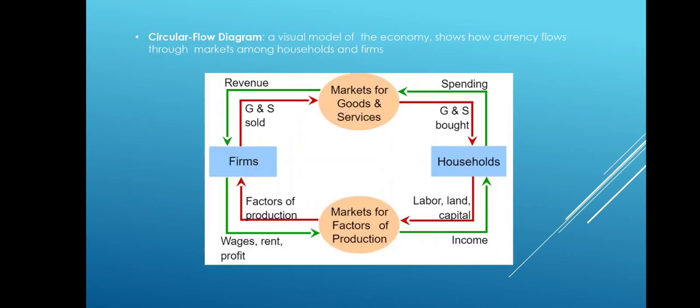Circular flow diagram — it's a visual model of the economy. It shows how currency flows through the market among households and firms. Households spend money and buy products from markets of goods and services. The revenue for markets for goods and services is obtained from firms. In the same way, firms and households are interdependent.